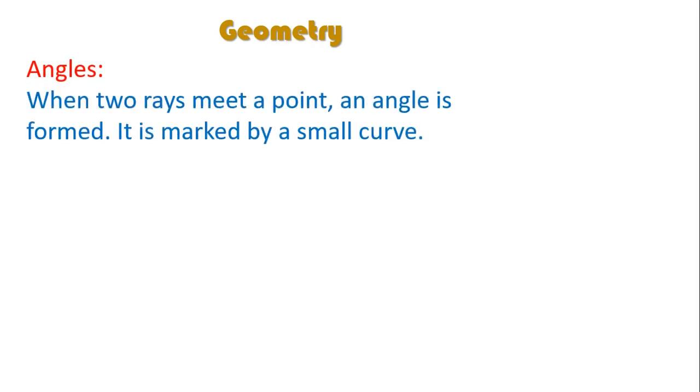Definition of an angle is when two rays meet at a point an angle is formed and it is marked by a small curve. We will understand this statement with the example.